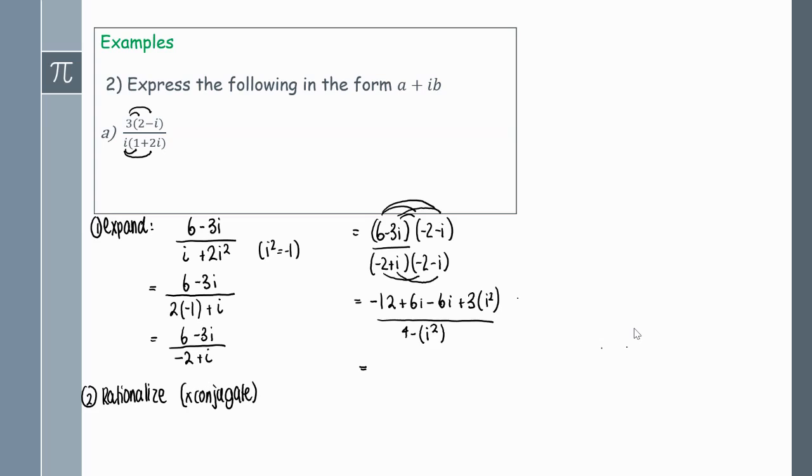Let's simplify the numerator and see what we can cancel out. Notice on the numerator 6i minus 6i will cancel, and the 3i squared, we replace i squared with minus 1, I will get 3 times minus 1. Similarly on the denominator, swap the i squared for minus 1 and we should get minus 12 minus 3 on the numerator and then 4 plus 1 or 5 on the denominator.